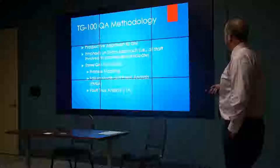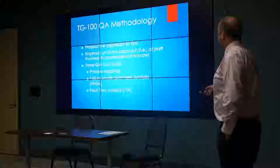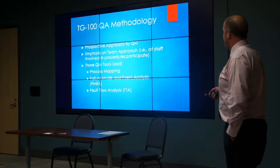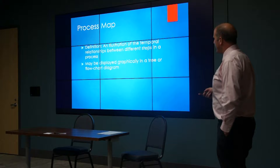Then you create quality management programs to prevent that or reduce that risk. There's an emphasis in the report on a team approach—all staff involved in the procedures participate in a TG-100 type of process. There are three quality management tools used: process mapping, failure mode and effects analysis (FMEA), and fault tree analysis. We're going to talk about all three of these now.